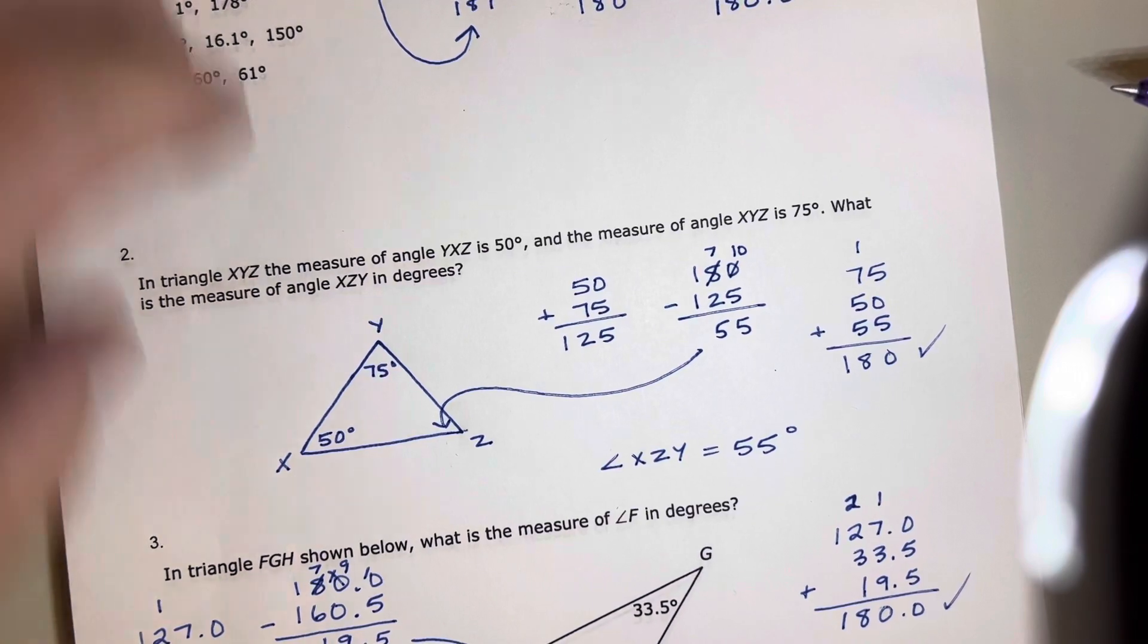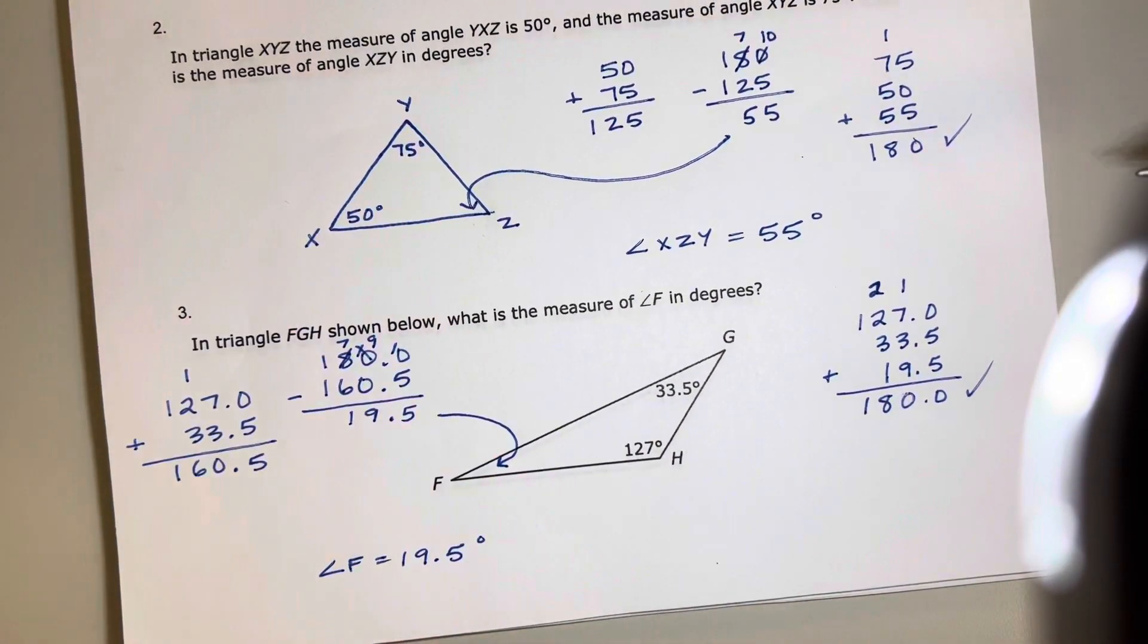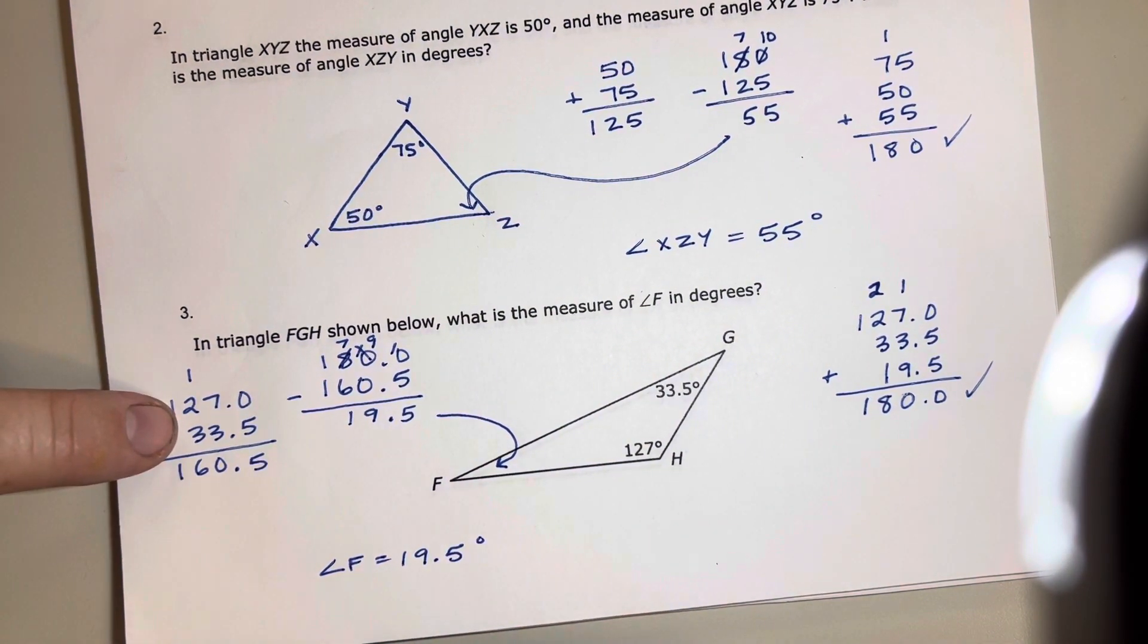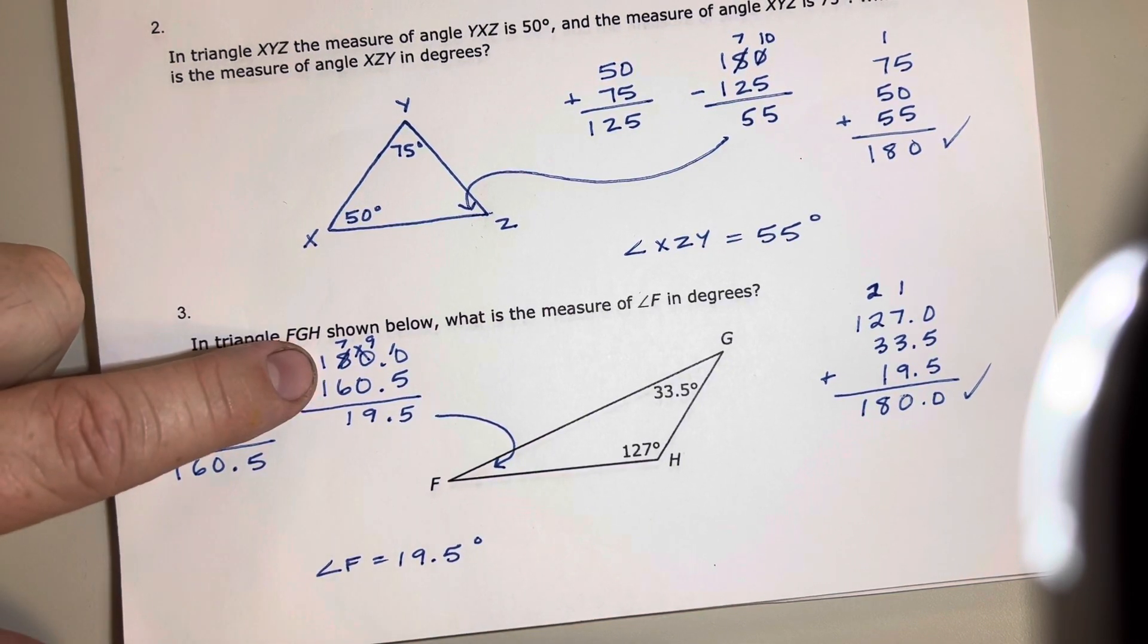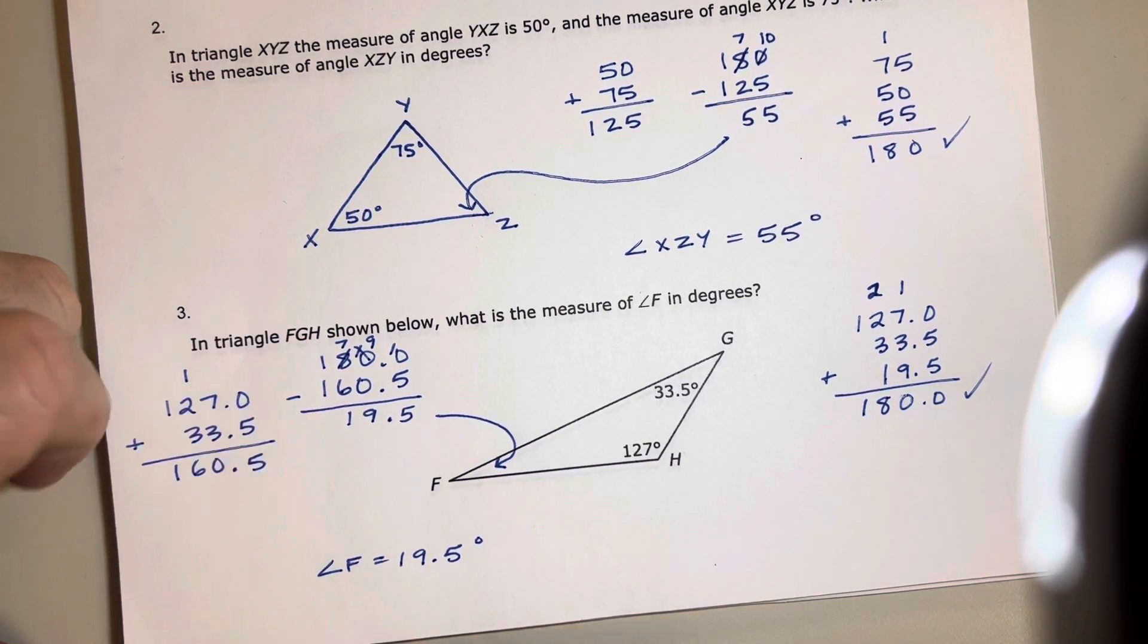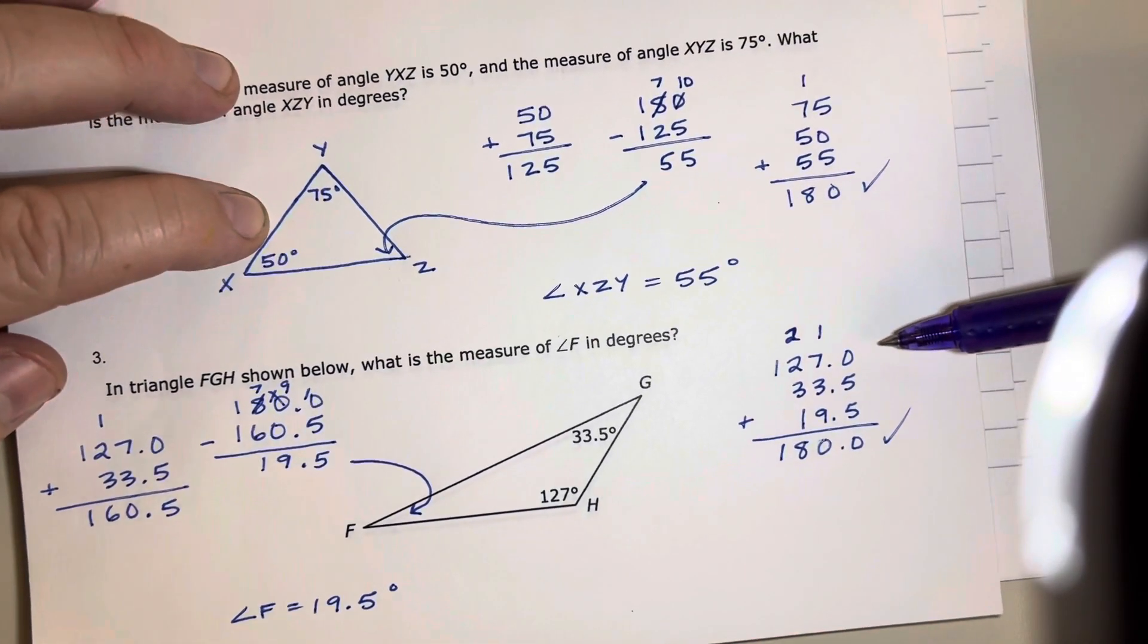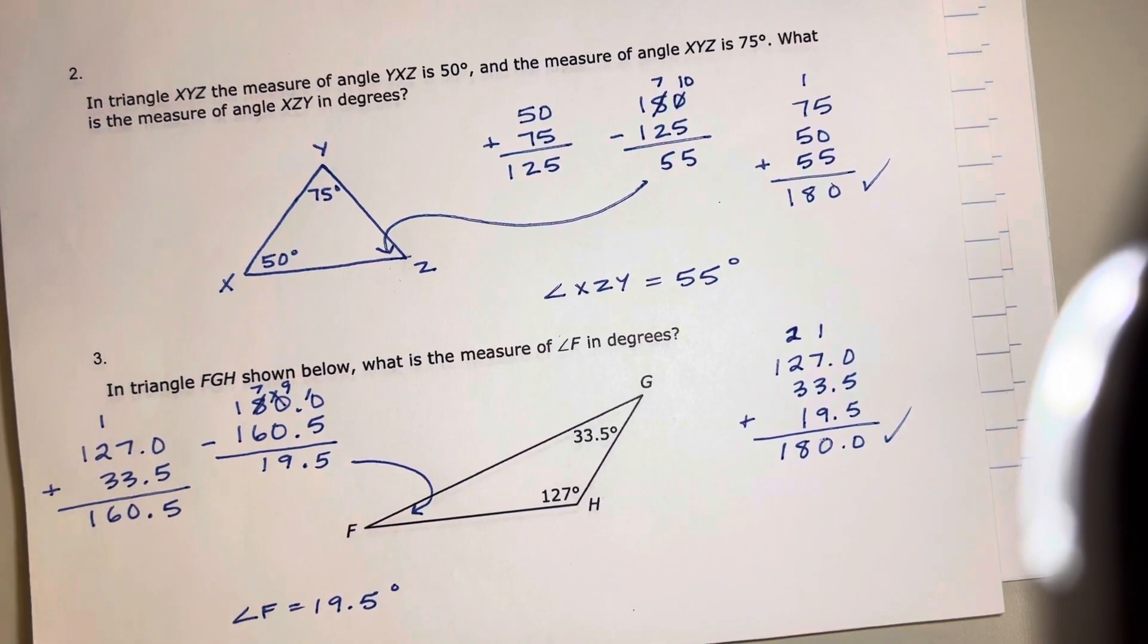And then in the last question, very similar to the second question, what's the angle measure for angle F down here? Again, adding the two together that I know for a total of 160.5 and subtracting that from 180 and there's 19.5 left over for angle F. Again I can check that by adding all three together and getting a total of 180.